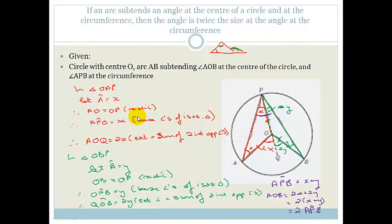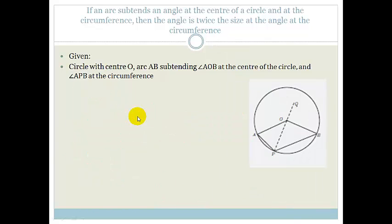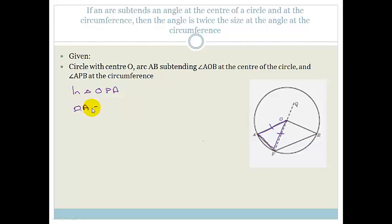That's your most basic proof, and remember they will give you the drawing to do the proof. Now let's look at the second diagram. We also have to prove the angle at the center equals twice the angle at the circumference. We start by looking at triangle OPA, where OA and OP are equal because they're radii.